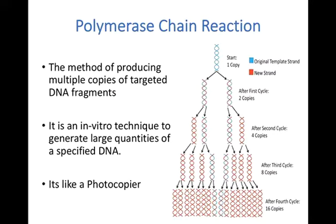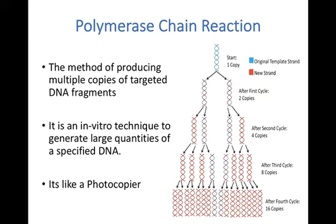The basic mechanism behind polymerase chain reaction is a method where we get multiple copies of a targeted DNA. After every step, the number of copies doubles. Starting from a single copy, we get two, then four, then eight, and so on. You can think of it as a photocopier machine for DNA — you provide the template and get multiple copies of that targeted DNA fragment.